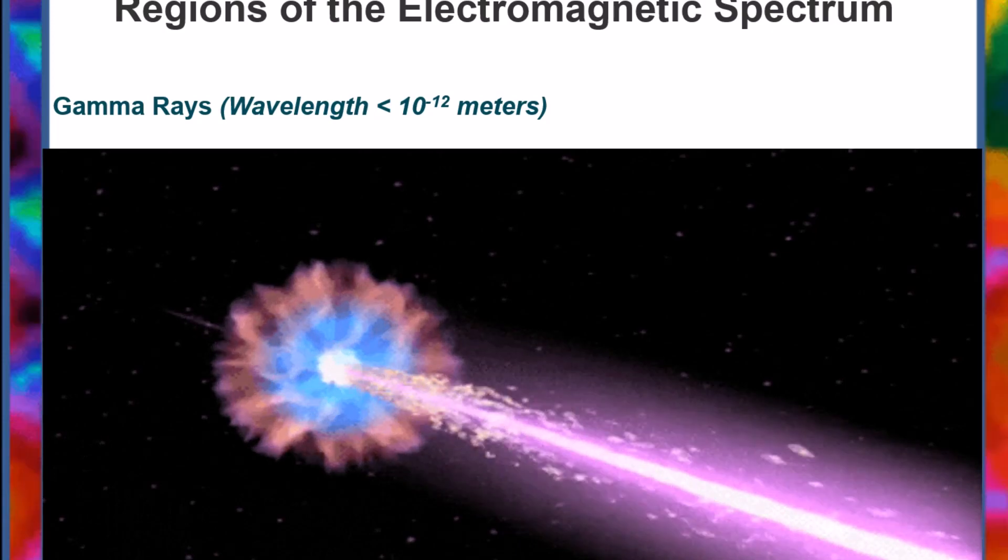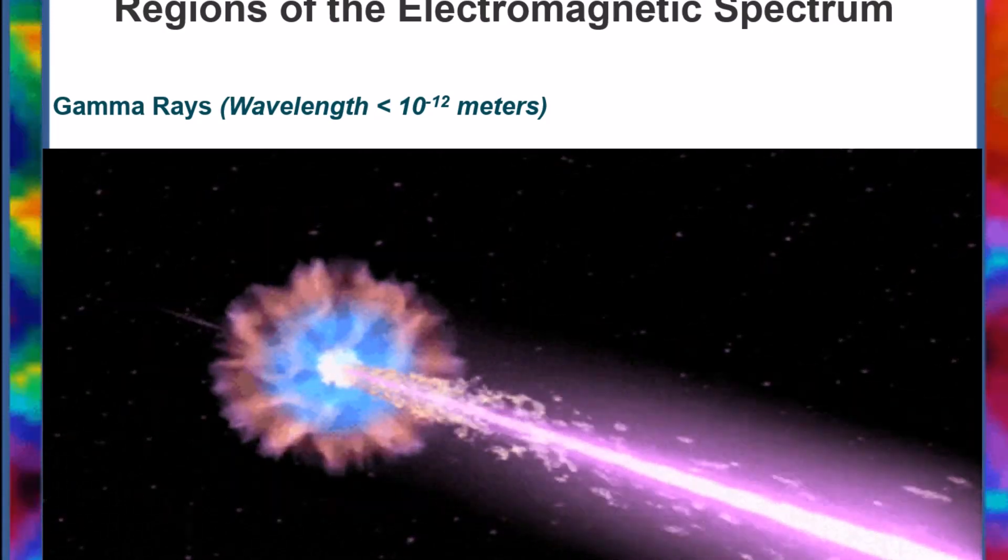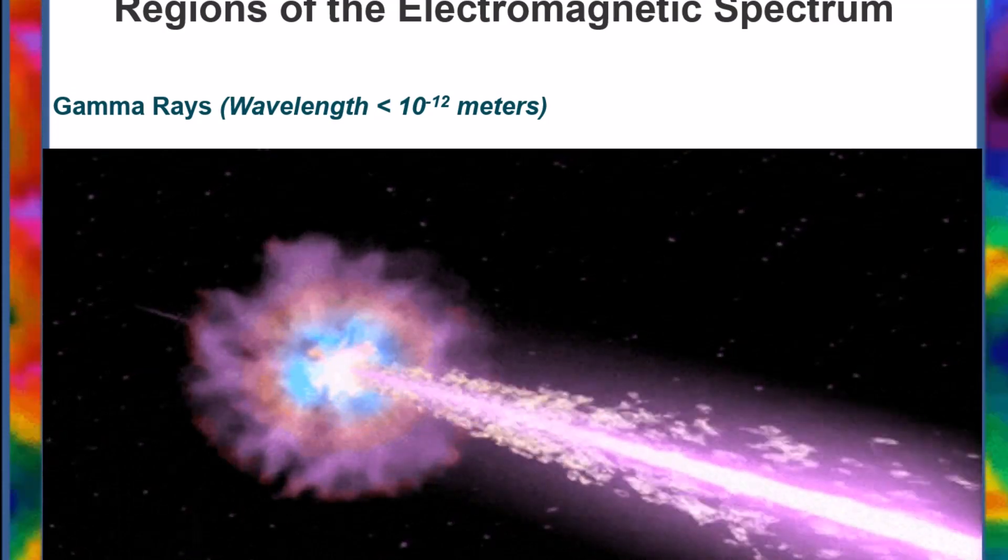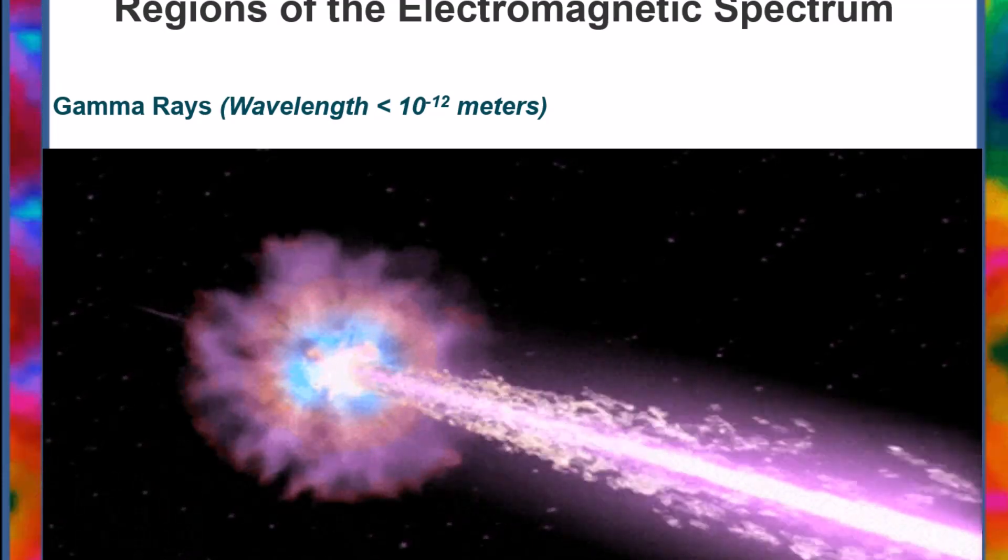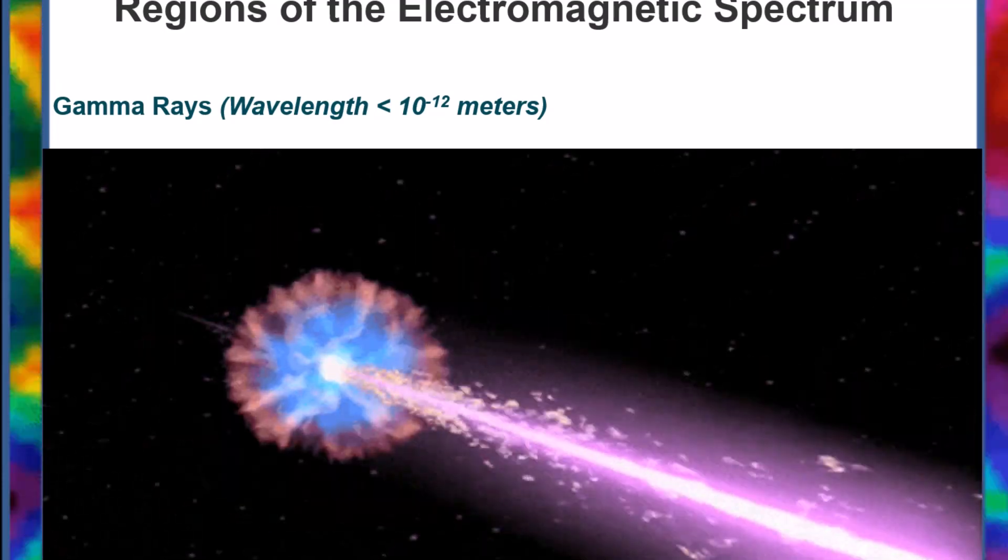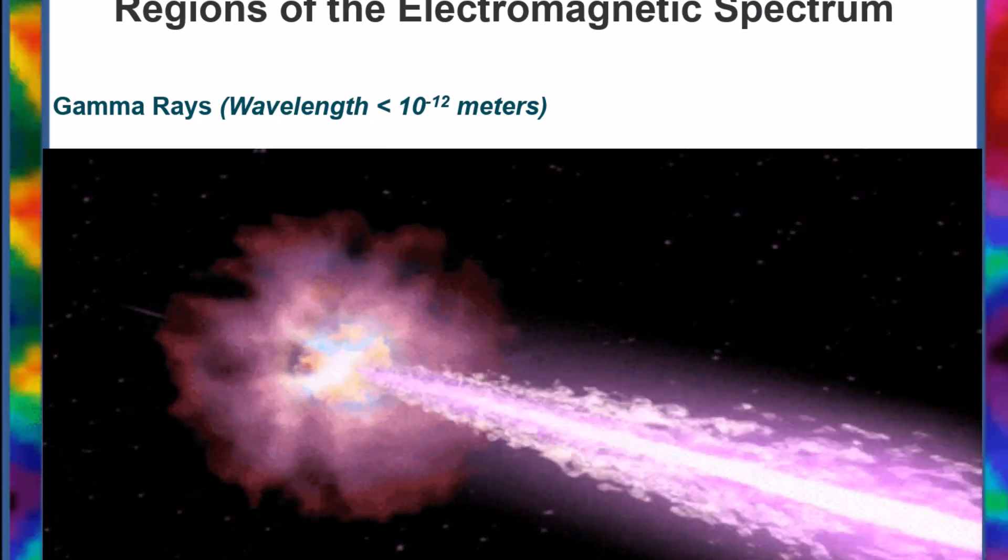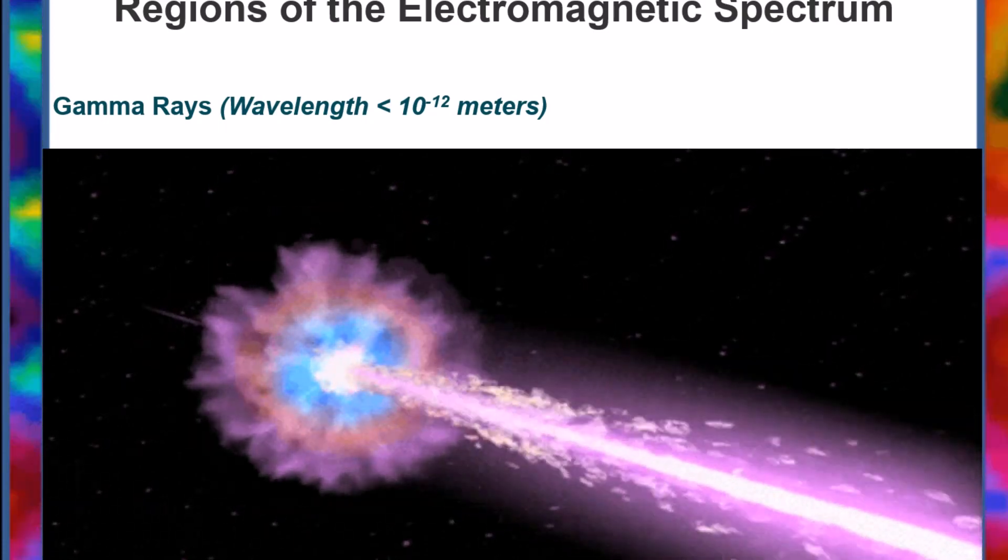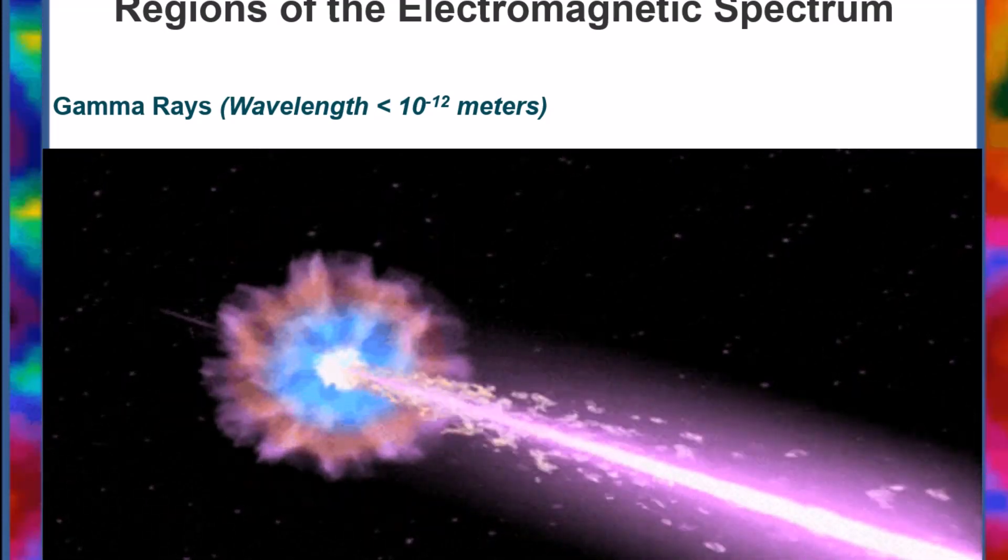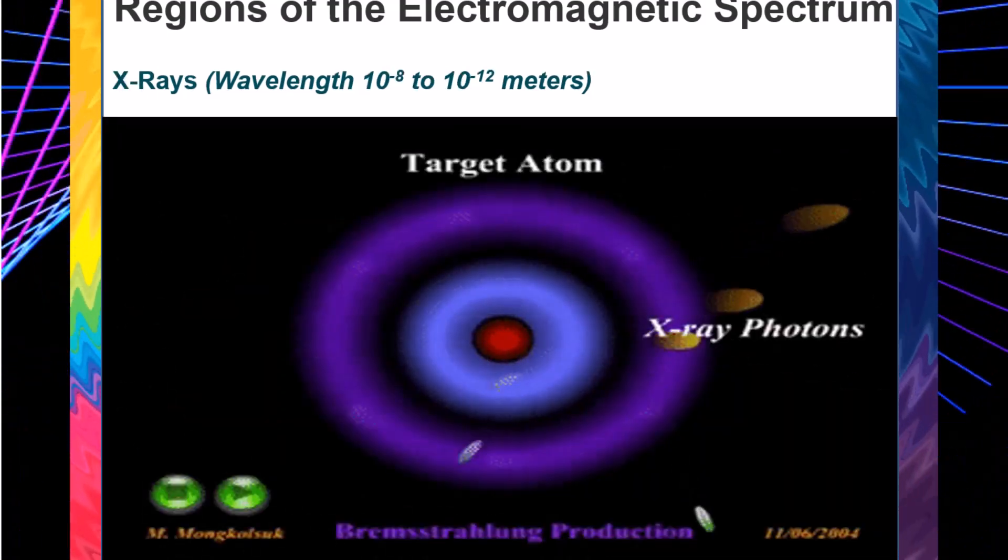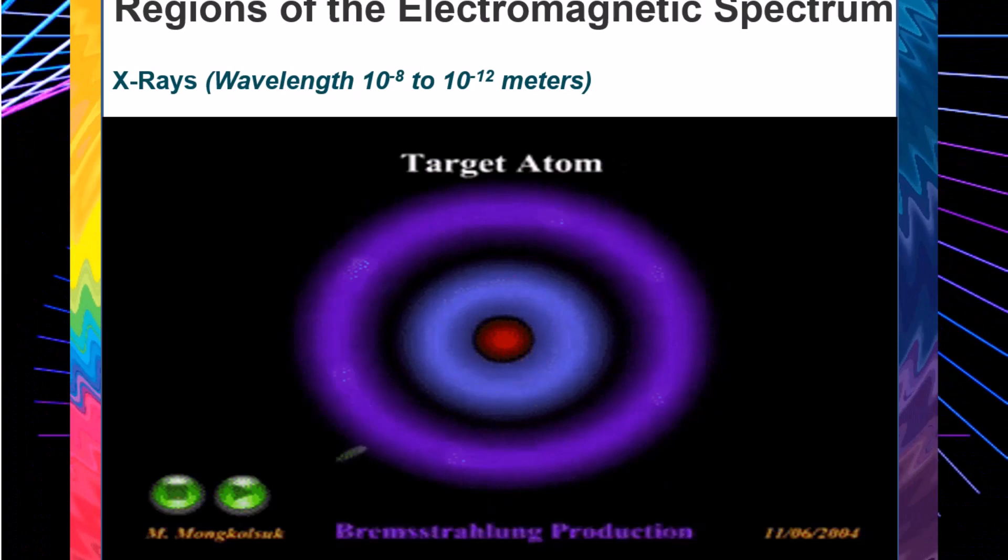Gamma rays, wavelength less than 10 to negative 12 meters. Gamma rays have the shortest wavelengths, less than 0.01 nanometers, and the most energy of any region of the electromagnetic spectrum. Gamma rays are produced by the hottest objects in the universe, including neutron stars, pulsars, and supernova explosions. Gamma rays can also be created by nuclear explosions. The majority of gamma rays generated in space are blocked by the Earth's atmosphere. This is a good thing as gamma rays are biologically hazardous.